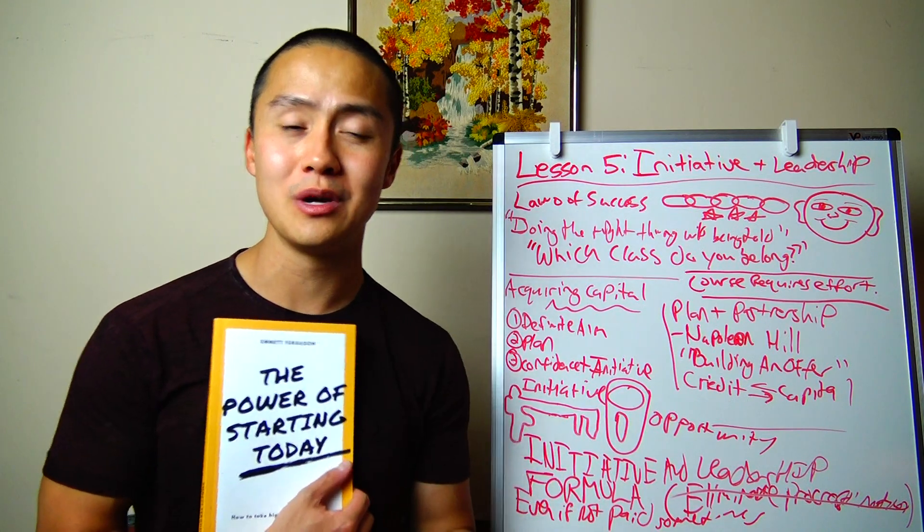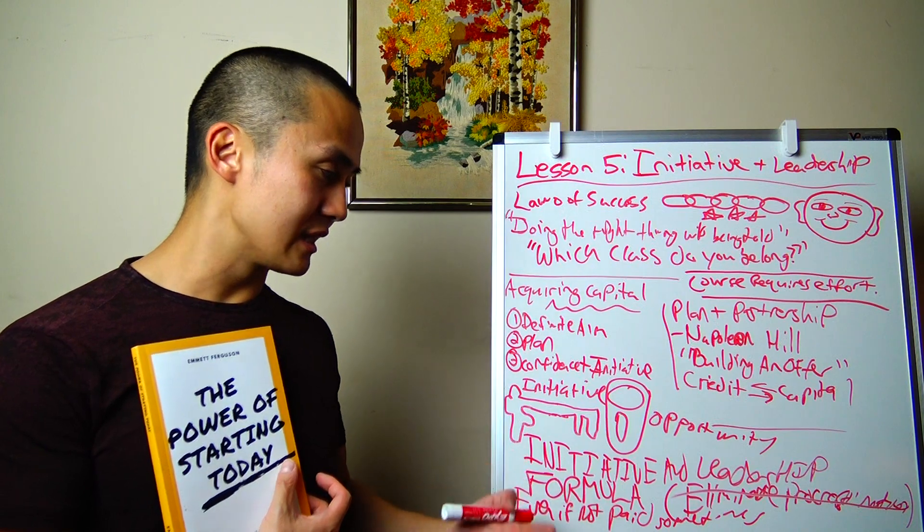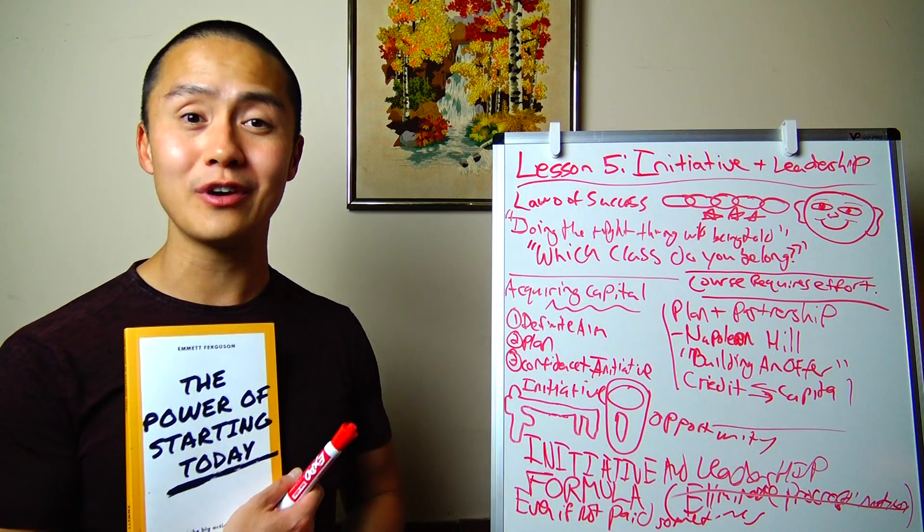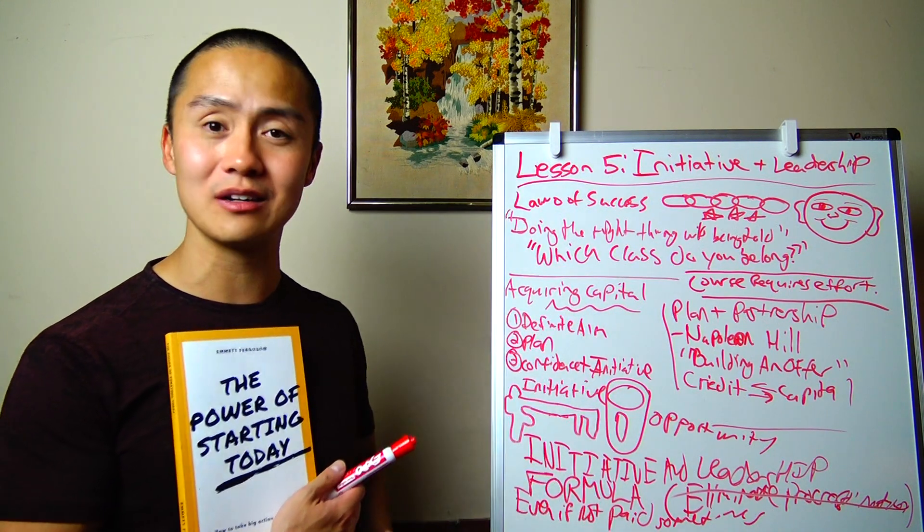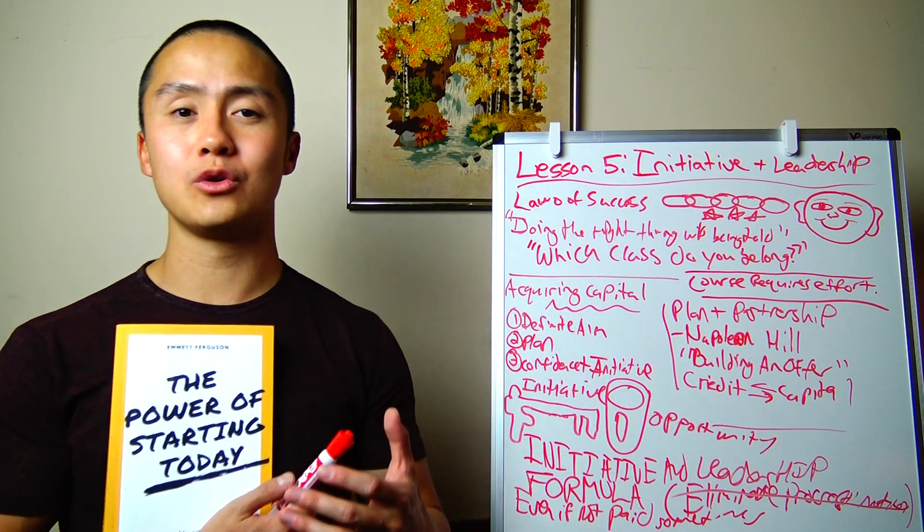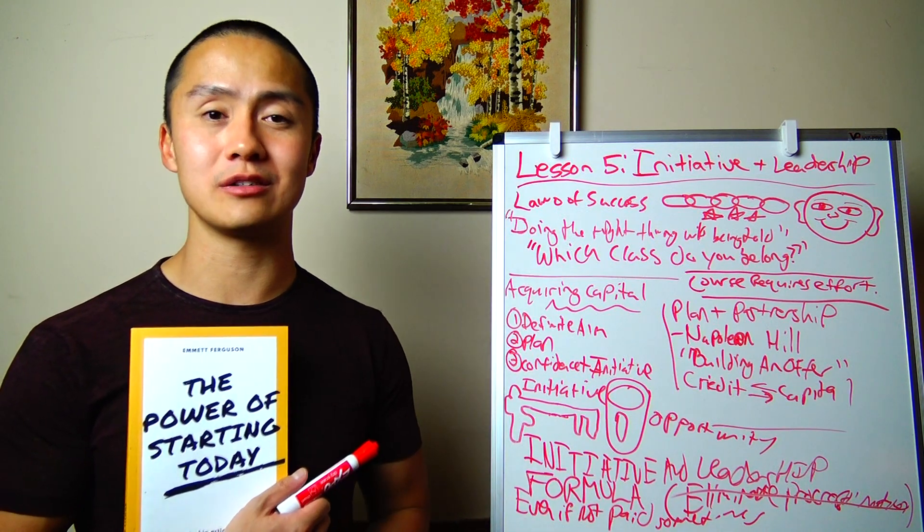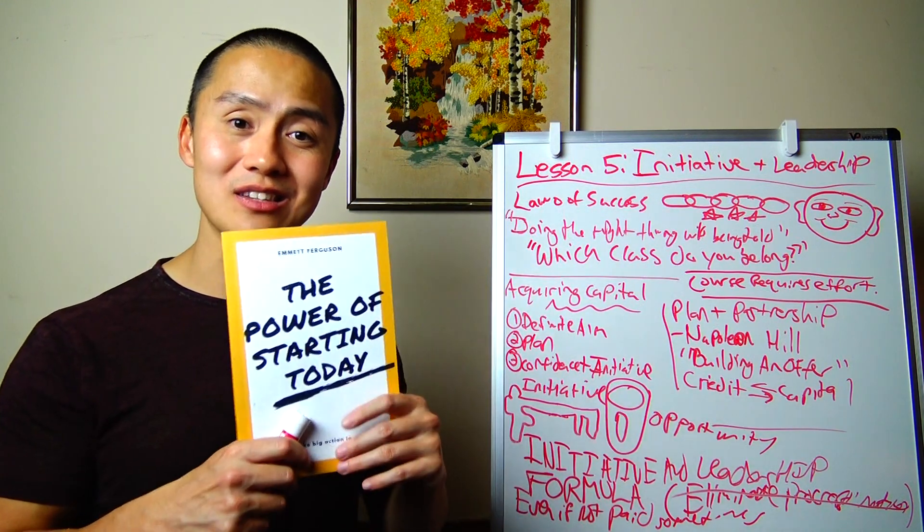And I love that formula. If you get a chance to read the book, we're wrapping up here. So there's a link in the description below where if you go to it, you can get a copy of the book for free and you can go in and you can look up this formula in lesson five on initiative and leadership, how to take action, how to beat procrastination and how to just start getting what you need to get done today.